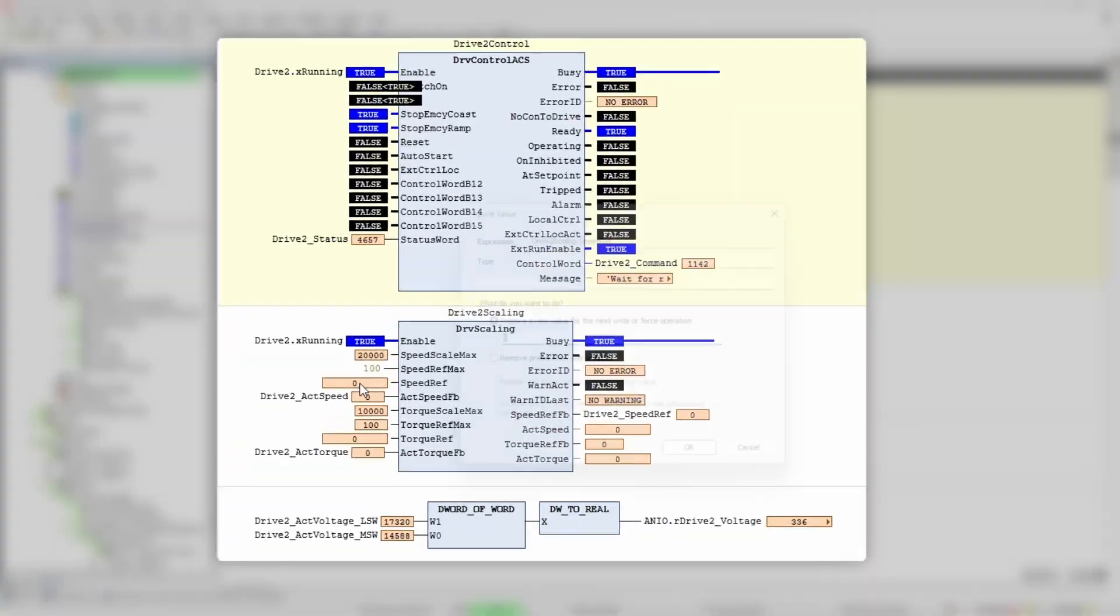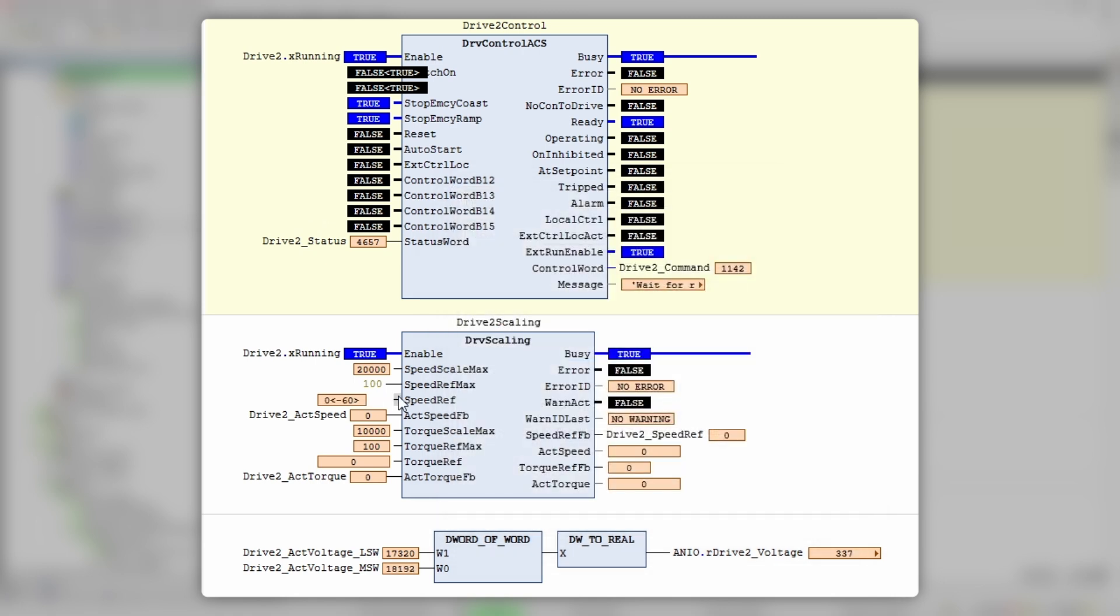And the last one: set run input to false and see how drive decelerates to standstill. You must still wonder how you run the motor in reverse—there is no dedicated reverse input on the function block. And it is quite simple: you just give negative reference value and the drive will interpret it as a reverse command. Actual speed and torque values will also change sign.